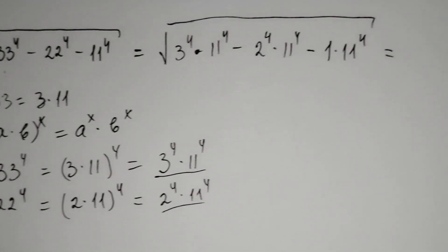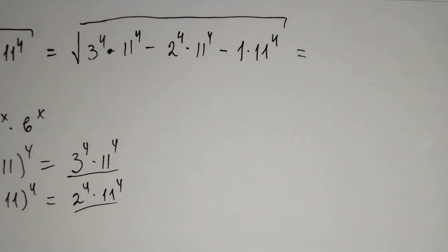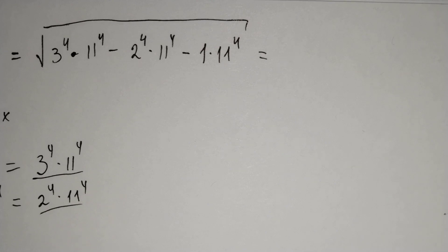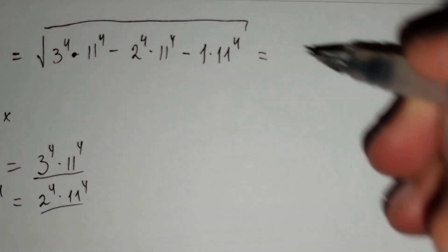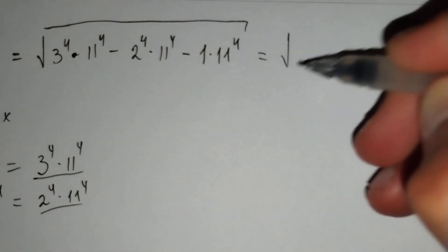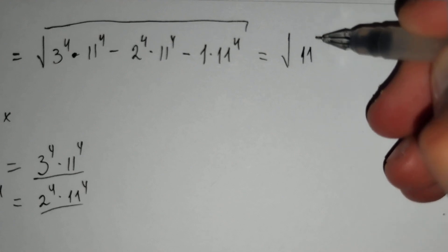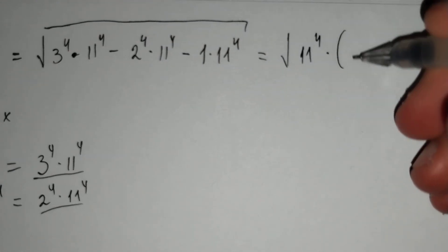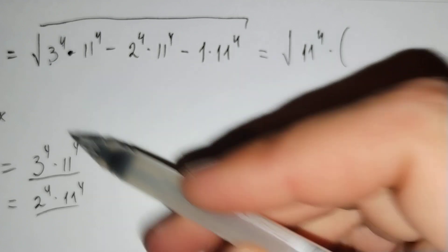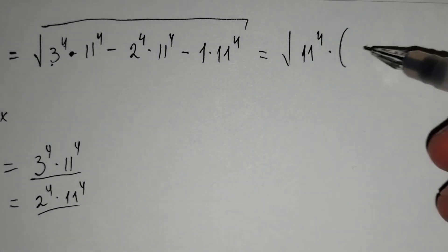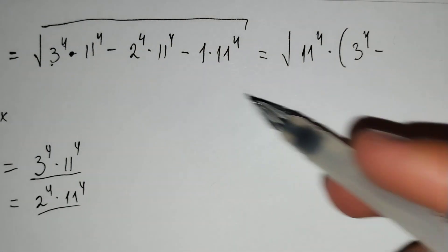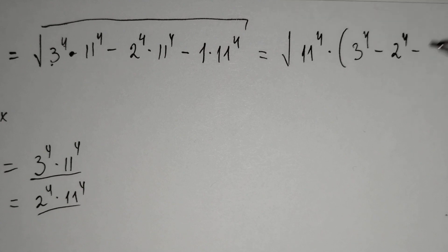Then, 11 to the power 4 is common in all terms. That's why we take it out of the brackets: the square root of 11 to the power 4 times (3 to the power 4 minus 2 to the power 4 minus 1).